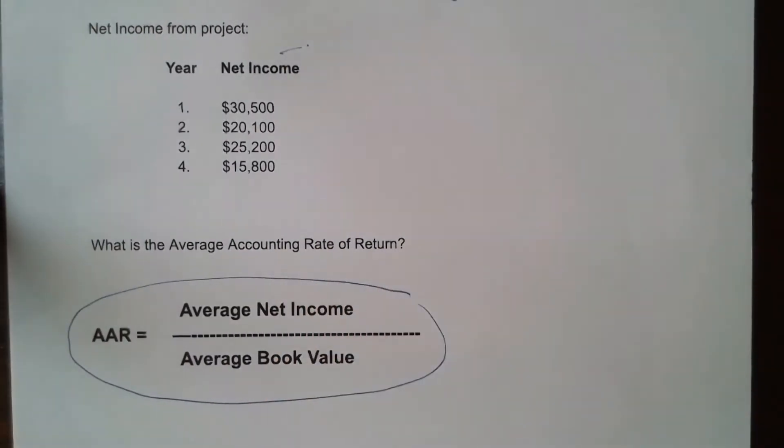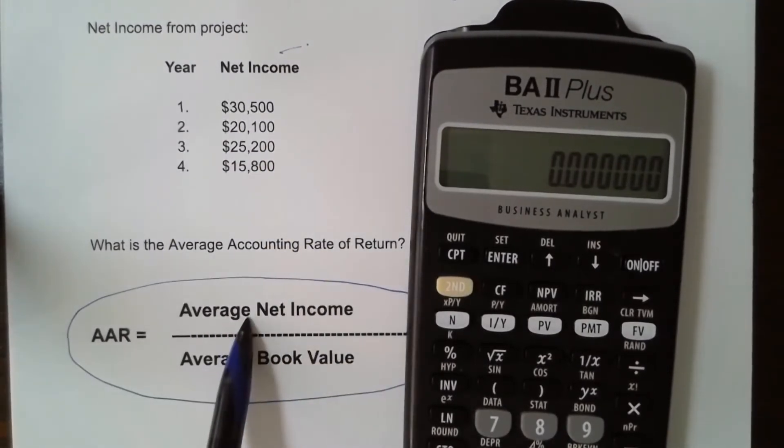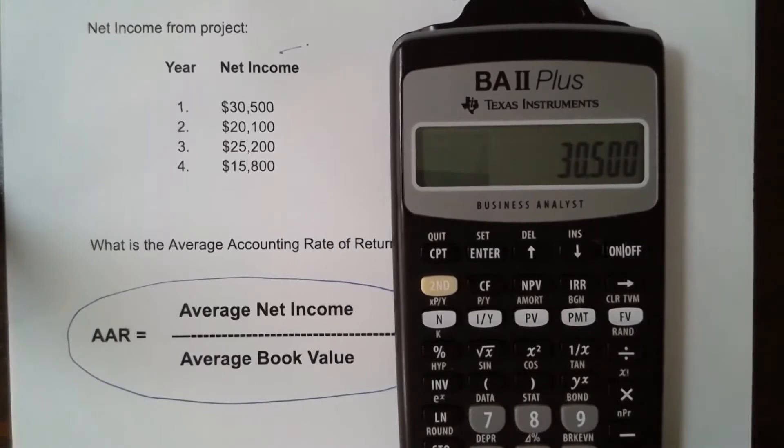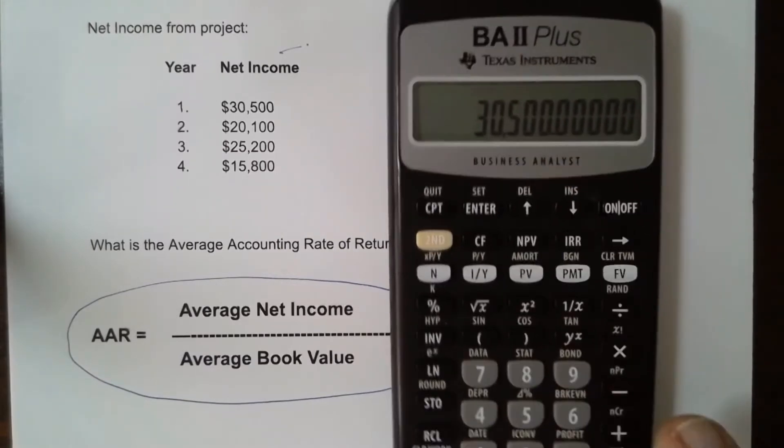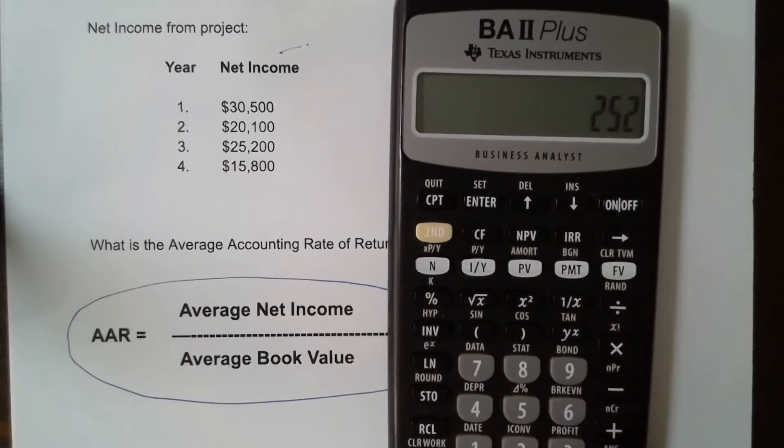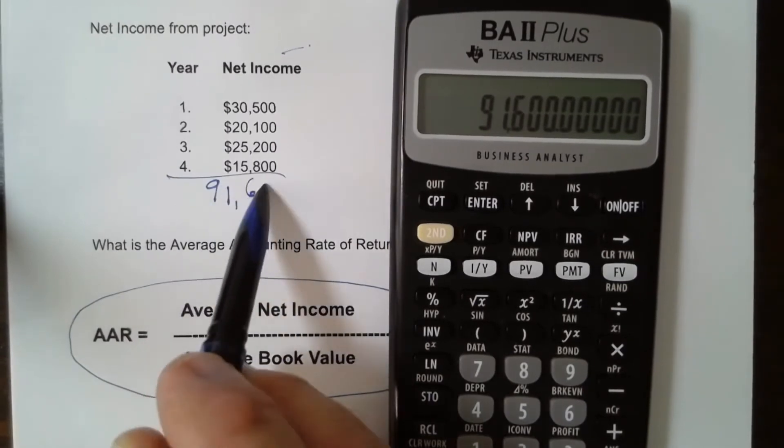So the first thing we need to do is we're going to find the average of our net income. In other words, we're going to do the numerator. So we've got four years of net income. To find the average, we need to add it up. So we'll start with $30,500 and we're going to add to that $20,100 and we're going to add to that $25,200 and finally $15,800. And total that, and that is $91,600.